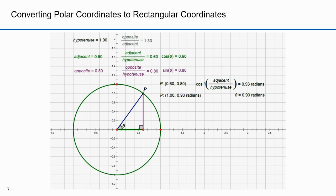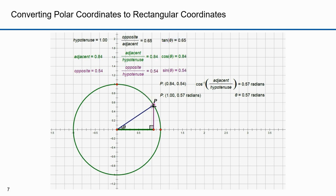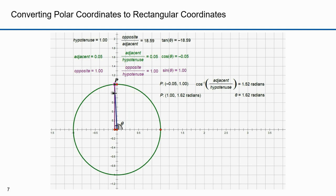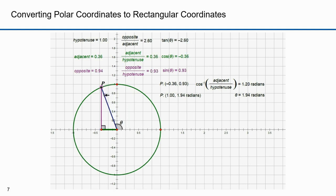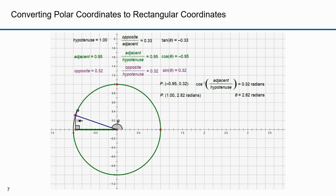The tangent is the opposite over the adjacent. That equals 1.33, which is the tangent of theta. If I move p along the unit circle, notice that while the values change, the length of the opposite always equals the sine of theta and the length of the adjacent always equals the cosine of theta. This holds true if I move p into the next coordinate system quadrant. Notice here that the cosine of theta is now negative. In this quadrant both cosine and sine of theta are negative.